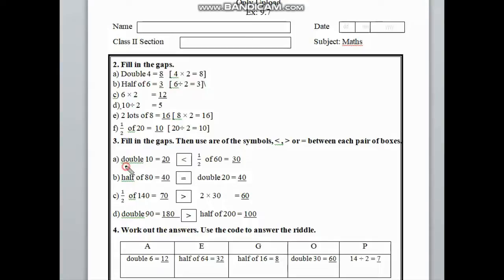First one here, we can see double 10. What is the answer of double 10? We know double 10 is 20. On the right side is half of 60. Half of 60 means we have to divide 60 by 2.